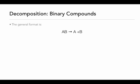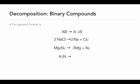The decomposition of binary compounds is just the exact opposite of the synthesis of binary compounds. You have a compound made up of two elements, and if it decomposes it simply breaks apart into those two elements. Sodium chloride is going to decompose into sodium and chlorine gas — Cl2 has a subscript 2 because it is a diatomic molecule — and then we balance the reaction. Magnesium nitride will decompose into magnesium and nitrogen gas; nitrogen is diatomic so it has the subscript 2, and then we balance. Potassium nitride decomposes into potassium and nitrogen gas, and again we balance the reaction.